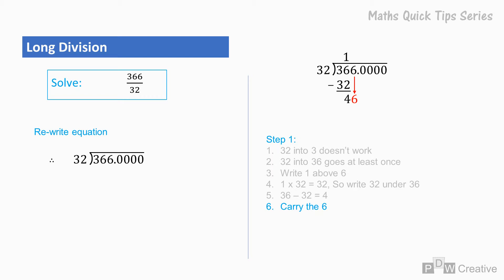From here on, it's a question of repetition until we find the answer. Step 2. 32 into 46 goes at least once, so we can write 1 above the 6.